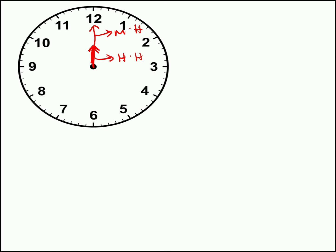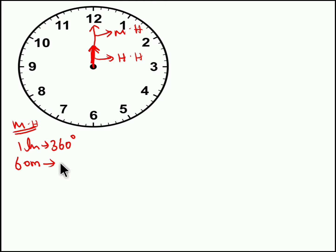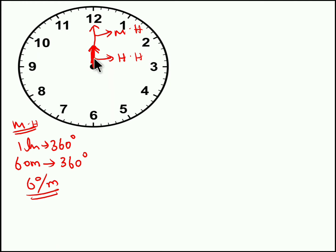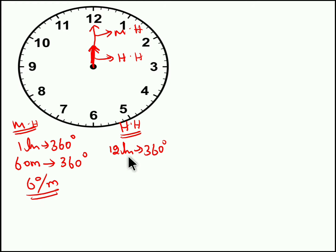If we take the speed of the minute hand, it will cover the complete 360 degrees in one hour — that is 60 minutes. So in 60 minutes if it covers 360 degrees, in one minute it will cover 6 degrees. So 6 degrees per minute is the speed of the minute hand. If we take the hour hand, it will take 12 hours to completely cover 360 degrees.